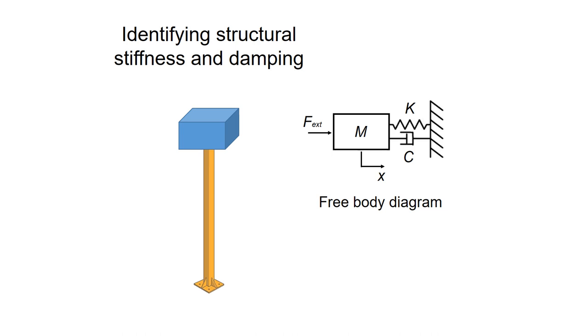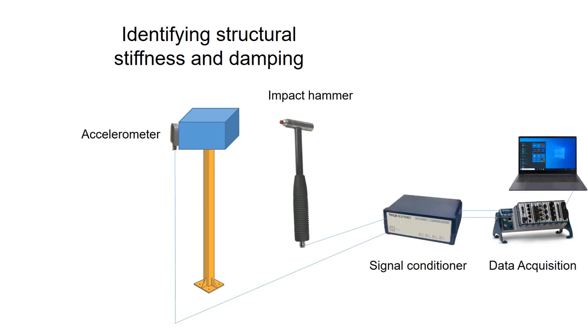Now to identify the structural stiffness and damping from an impact test, you need the following equipment such as impact hammer, accelerometer, signal conditioner, and data acquisition.